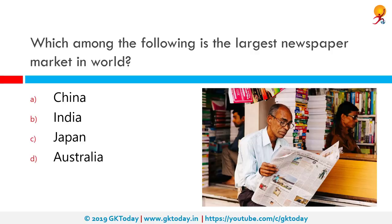Which among the following is the largest newspaper market in the world? That happens to be India. The Times of India is the largest circulated English language daily newspaper in the world across all formats — whether broadsheet, compact, tabloid, or online.